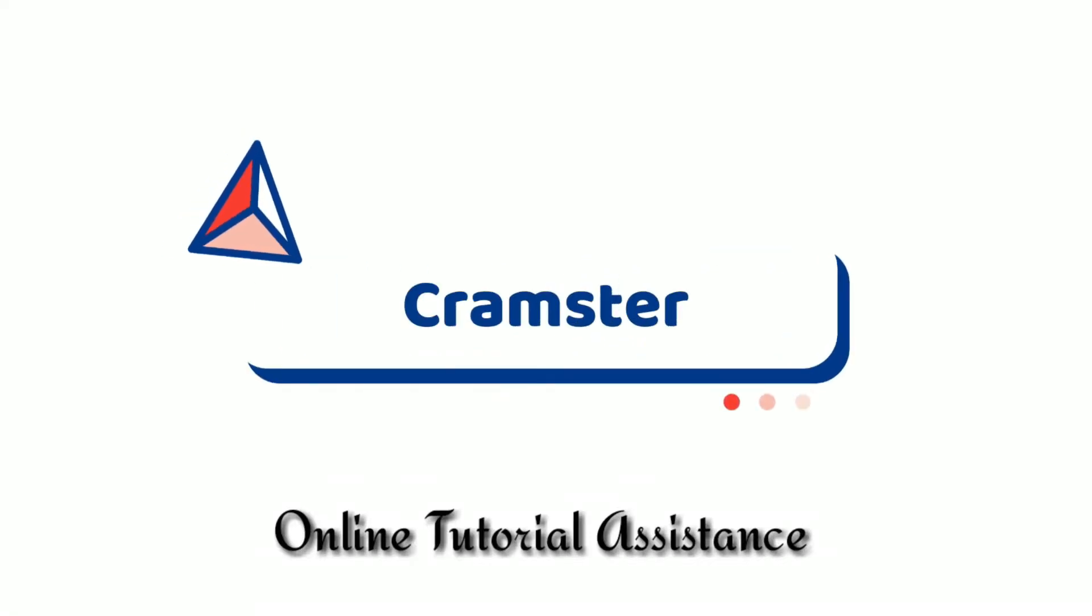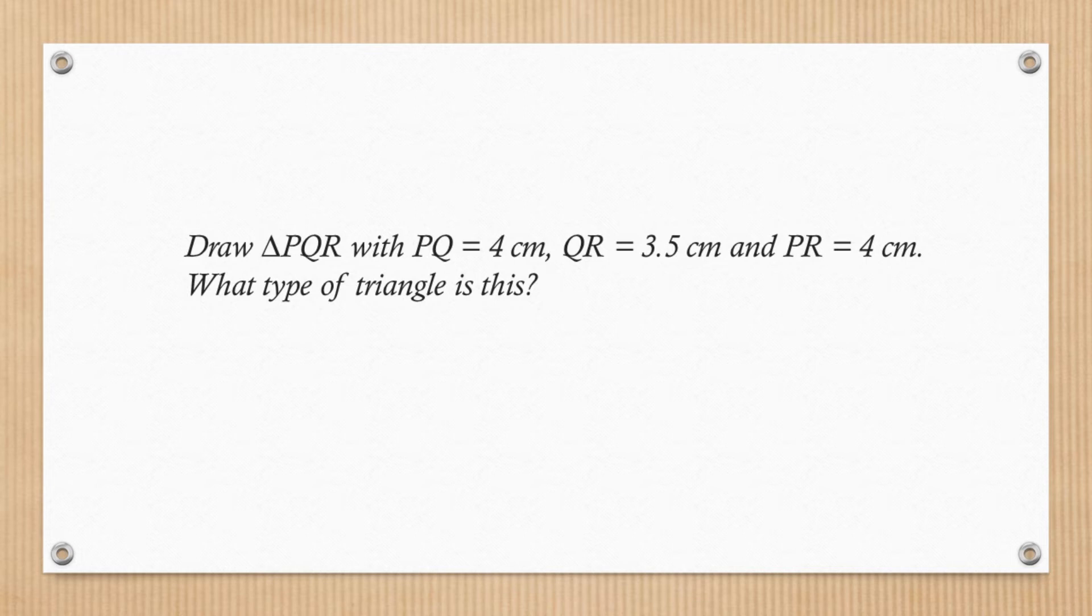Dear students, welcome to Cramster. Draw a triangle PQR with PQ equal to 4 cm, QR equal to 3.5 cm, and PR equal to 4 cm. What type of triangle is this?